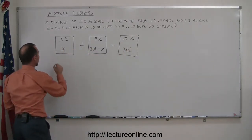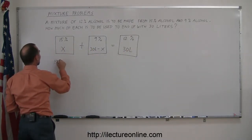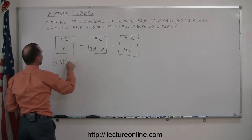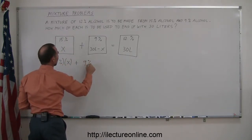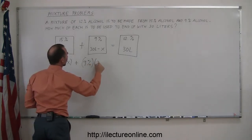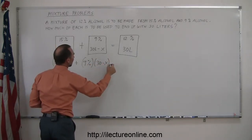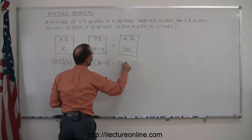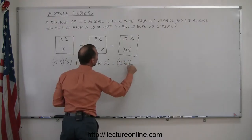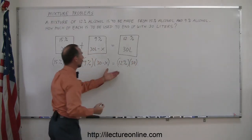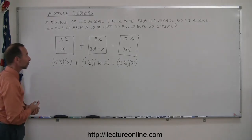Which means that 15% times x plus 9% times 30 minus x is equal to 12% times 30. And now all you have to do here is solve that equation for x.